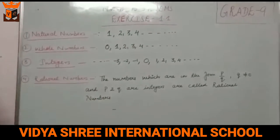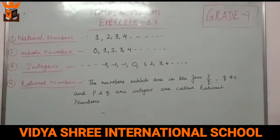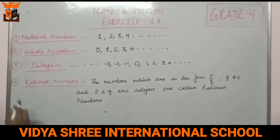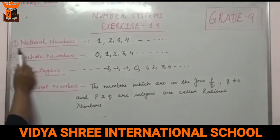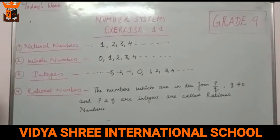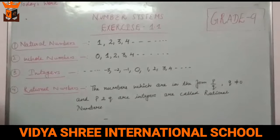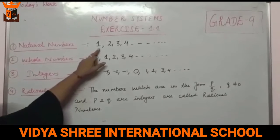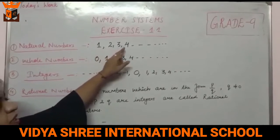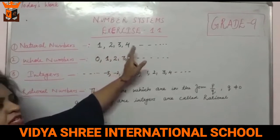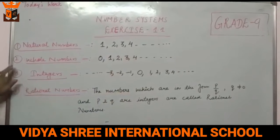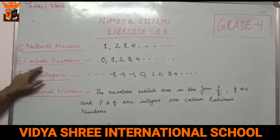First we will discuss all its basic points. The first point is natural numbers. Natural numbers kya hoote hai beta — ye 1 se start hoote hai: 1, 2, 3, 4, 5, 6 and so on. Second is whole numbers.